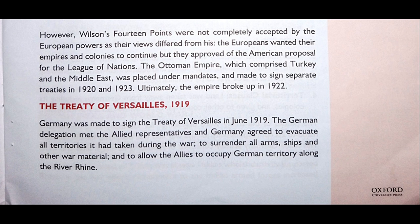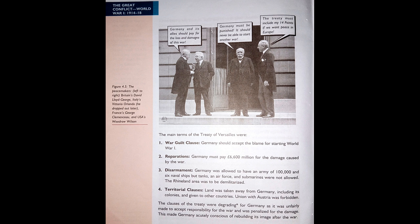The Treaty of Versailles 1919: Germany was made to sign the Treaty of Versailles in June 1919. The German delegation met the Allied representatives, and Germany agreed to evacuate — evacuate meaning to remove someone from a place of danger to a safer place — all territories it had taken during the war, to surrender all arms, ships and other war material, and to allow the Allies to occupy German territory along the Rhine.